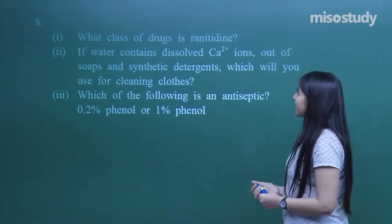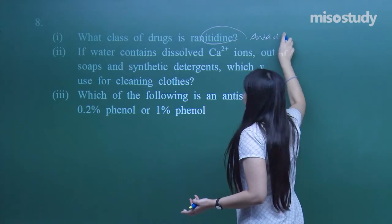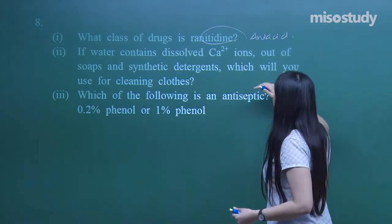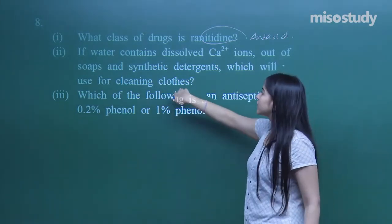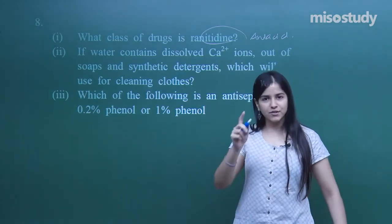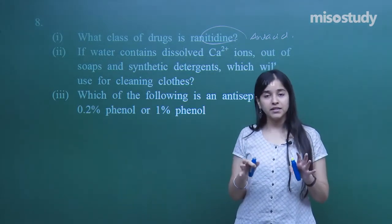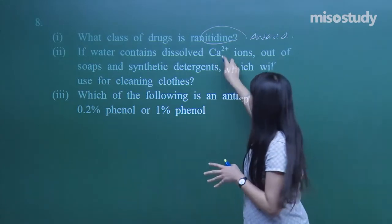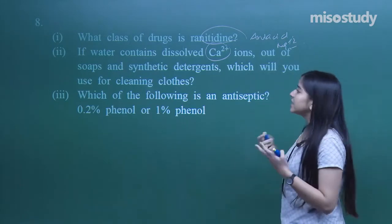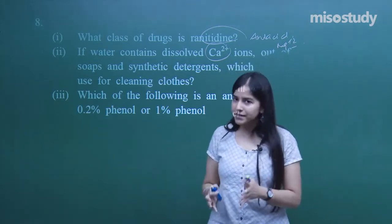What class of drugs is ranitidine? It's antacid. If water contains dissolved calcium ions, out of soaps and synthetic detergents, which will you use for cleaning clothes? It is always the detergent which you use. We have got hard water which contains calcium and magnesium ions.